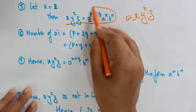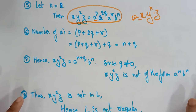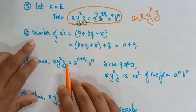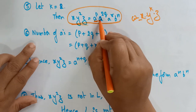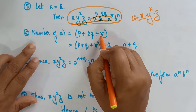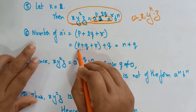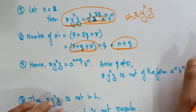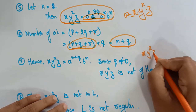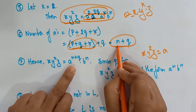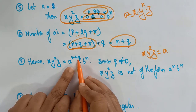Whenever I substitute the values, XY²Z = aᵖ · a²ᵠ · aʳ · bᴺ. Now let me calculate the number of A's. There are three terms of A's, so I take the exponents: P + 2Q + R. I take one Q outside to get P + Q + R + Q. We know that P + Q + R = N, so substituting gives N + Q. Therefore XY²Z = aᴺ⁺ᵠ · bᴺ.